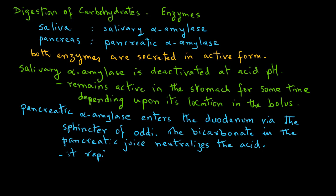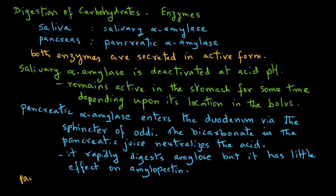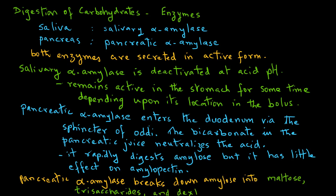The pancreatic alpha-amylase rapidly digests amylose, but it has little effect on amylopectin. Recall that amylopectin is the one that has branched chains of glucose molecules. The pancreatic alpha-amylase breaks down amylose into maltose, trisaccharides, and dextrins that require additional digestion later in the GI tract. Remember that ultimately the carbohydrate has to break down to the monosaccharide.